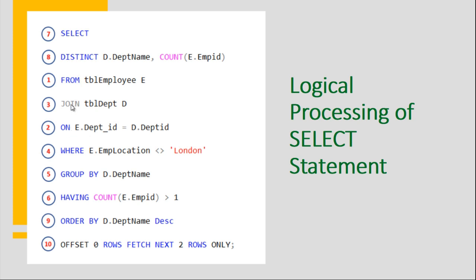To recap: FROM clause, ON clause, and JOIN clause execute first. Then it moves to WHERE clause processing, then GROUP BY, then HAVING clause, then the SELECT statement retrieving unique records and discarding duplicates. Then the data is sorted based on the column mentioned in the ORDER BY clause, and finally OFFSET retrieves the range we have specified.